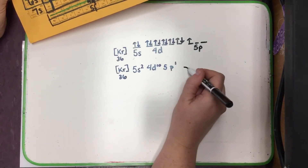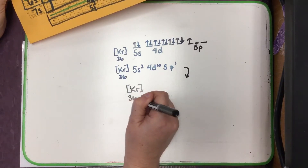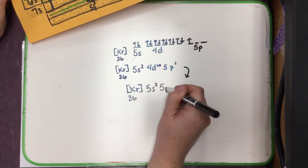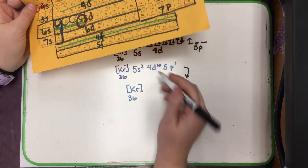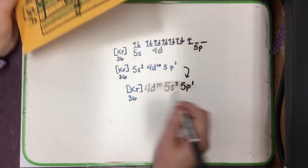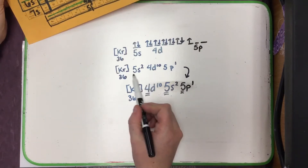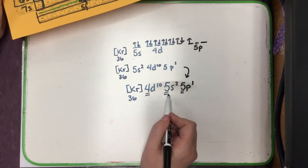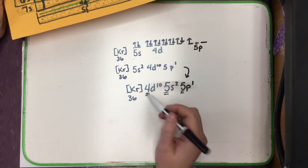Sometimes you're going to see these electron configurations rewritten — this is actually how your textbook will show it. We'll rewrite them so that the energy level or the principal quantum number goes in order. Even though the 4D is written after the 5S when we fill it, they'll rewrite it so that 4 comes before 5. You really don't need to do that; I just don't want it to surprise you if you ever see it.